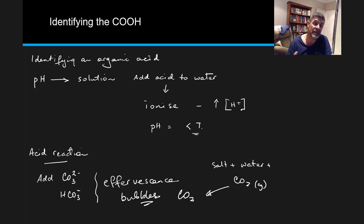Hopefully what you have now is a series of tests you can carry out. If you carry out the first one, you'll get a positive result that tells you what the identity is. For example, if you add carbonate ions through sodium carbonate and observe effervescence, you can say we've got an organic acid.